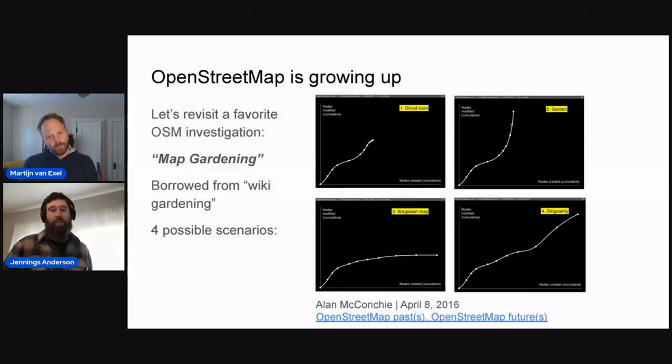Wonderful. So to do this, I wanted to revisit one of my favorite OSM investigations. This was an investigation done by Alan McConkie back in 2016, where he was borrowing this term called wiki gardening from Wikipedia and turning it into this phrase of, is there such a thing as map gardening? So what I mean here, or what he meant here when he was proposing this, is this idea where with a wiki garden you have all the data has been contributed, right? So everything has been planted, so to speak.